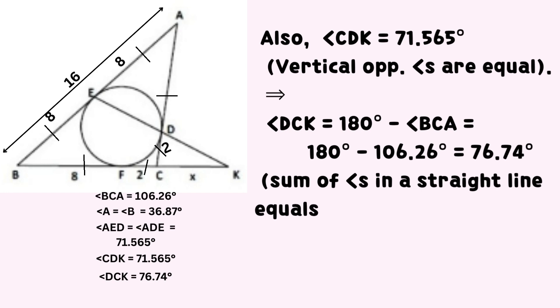This implies that angle DCK equals 180 degrees minus angle BCA which after substitution of values equals 76.74 degrees. Sum of angles in a straight line equals 180 degrees.